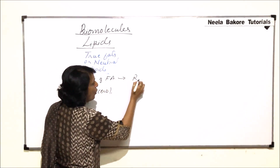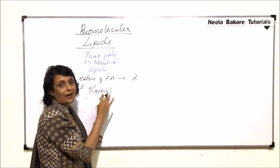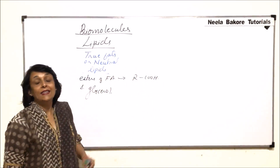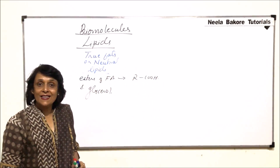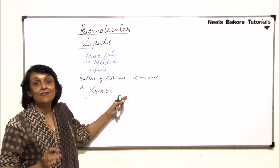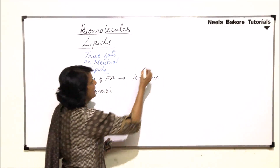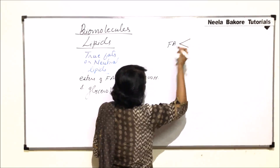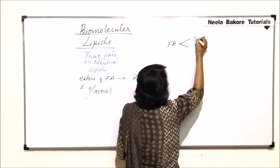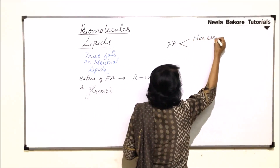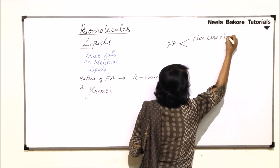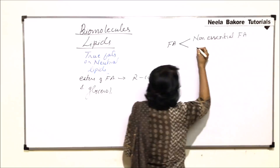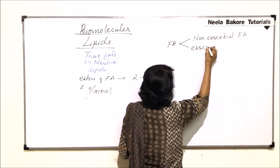Fatty acids are long-chain hydrocarbons with a carboxyl group — they have a long chain of hydrocarbon represented as R, and a carboxyl group, COOH. These fatty acids are divided into two categories: non-essential fatty acids and essential fatty acids.